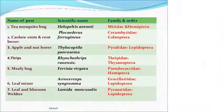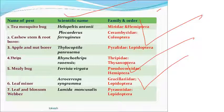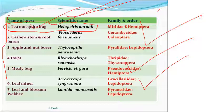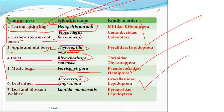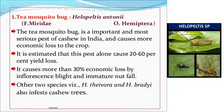यह कुछ important pests and diseases जो vector की तरह काम करते हैं, उनका scientific name और family याद रख सकते हैं — entomology के लिए भी important है. यह सारे के सारे crop के लिए काम आ सकते हैं: Tea mosquito bug जिसे Helopeltis antonii बोलते हैं — अभी हमने देखा कैसु में. Cashew stem and root borer, Phloeosinus. Apple and nut borer, Thylacoptila. Thrips, Rhynocothrips. Mealybug, Planococcus. Leaf miner, Acrocercops. Leaf and blossom webber, Lamida. Helopeltis antonii — यह Hemiptera order है. यह सारे के सारे याद रखें क्योंकि important है.